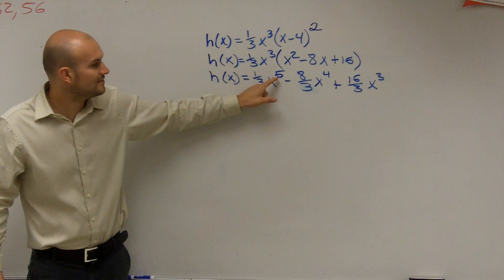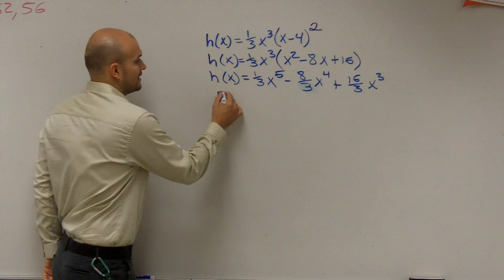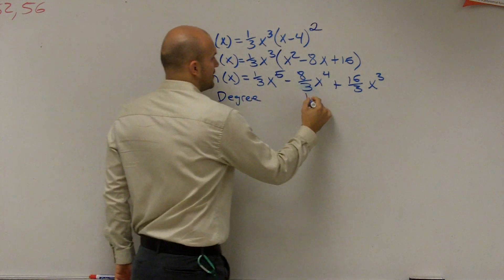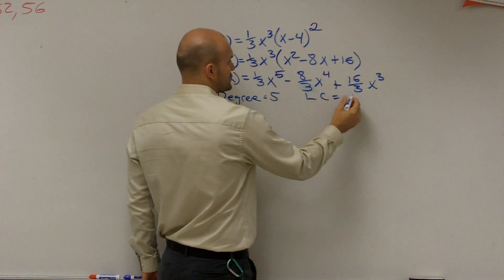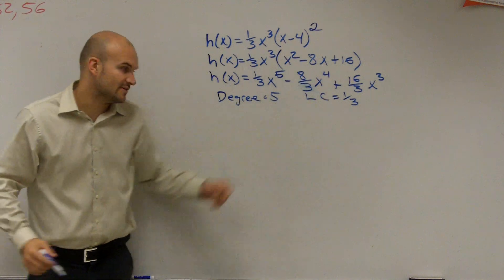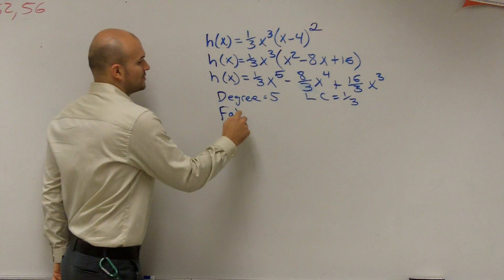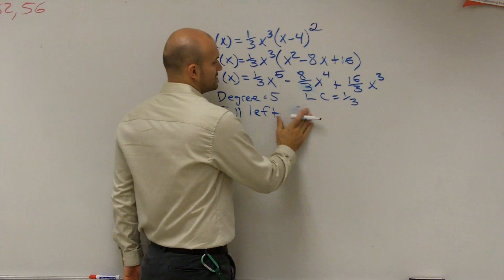So what we have here is x to the fifth power, so that's going to be your degree. So a lot of times I'll just write degree, and then I'll write my leading coefficient. My degree is equal to 5, leading coefficient is one-third. Since this is odd, and that is even, my graph is going to fall to the left and rise to the right.